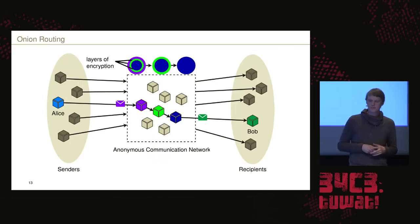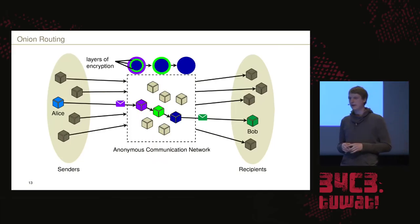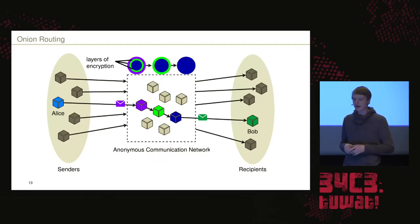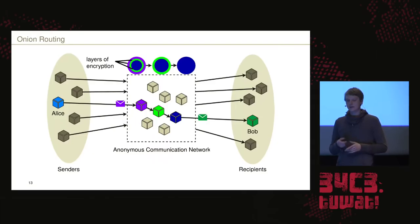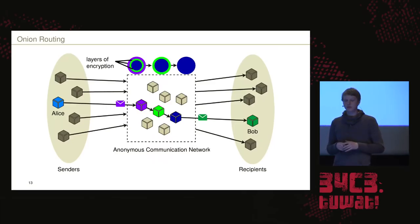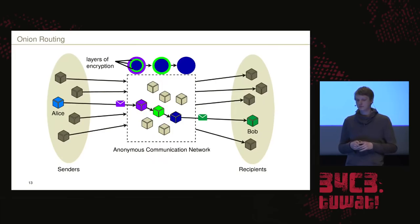Onion routing is explained on this scheme. If you are familiar with Tor, you might already know it. You have the sender and the receiver, and Alice sends a message encrypted with three layers of encryption. We see three nodes in the ACN — the message is encrypted towards the purple node, the green node, and the blue node. As the packet propagates through the ACN, single layers of encryption are removed by each node, so that Bob receives the message as expected.